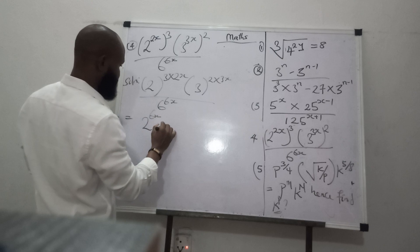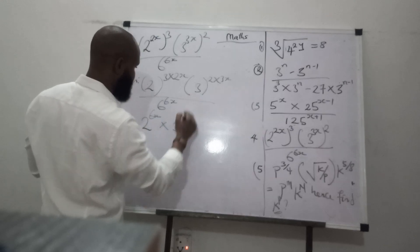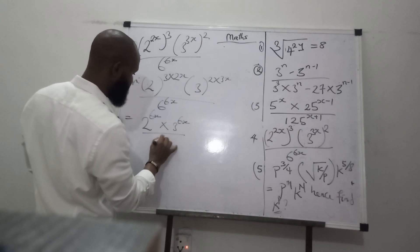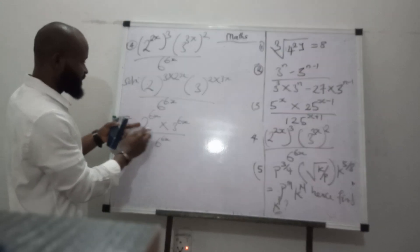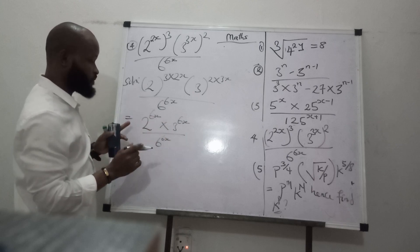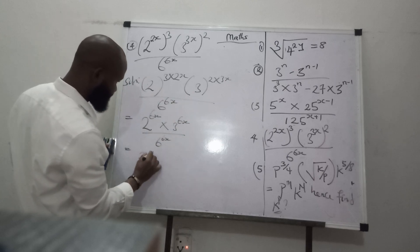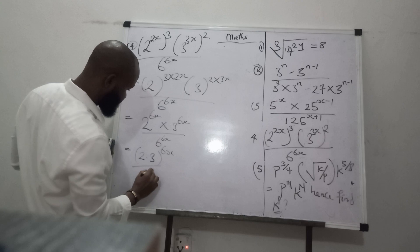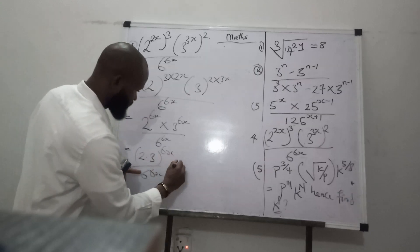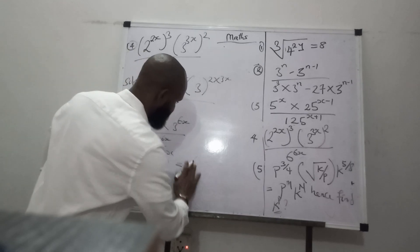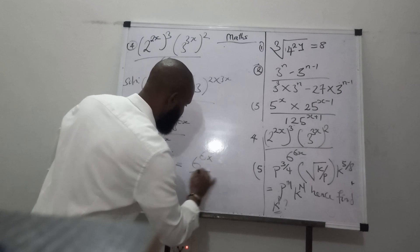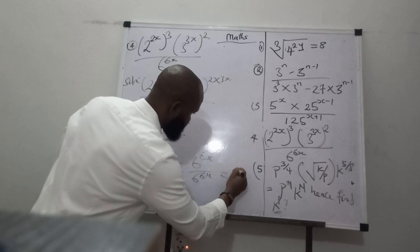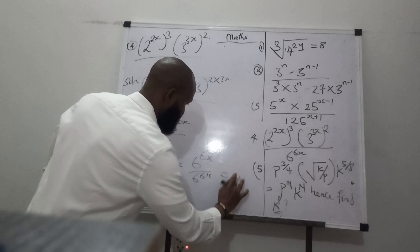Therefore, 2 raised to the power of 6x multiplied by 3 raised to the power of 6x, all over 6 raised to the power of 6x. Since they have equal power, we can say 2 times 3 raised to the power of 6x, all over 6x. This gives us 6 raised to the power of 6x, all over 6 raised to the power of 6x, which gives us 1. So our final answer is 1.